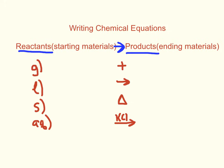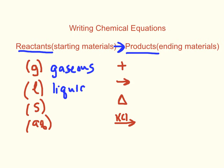You also might have some symbols written after the formulas, and we're going to really put to use the nomenclature that we did writing the formulas from names. You may see a symbol after them, like a little G in parentheses — that means it's in the gaseous state. The L means it's in the liquid state. The S means it's a solid state. And AQ, which may be new to you, means it is dissolved in water — that is called an aqueous solution.